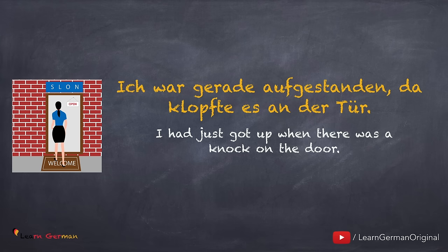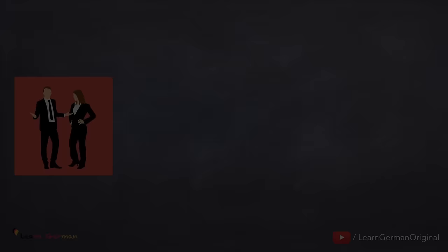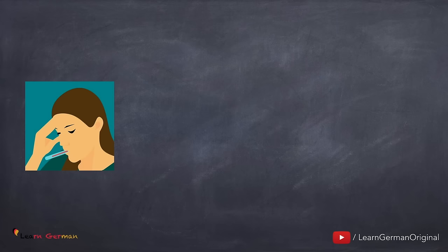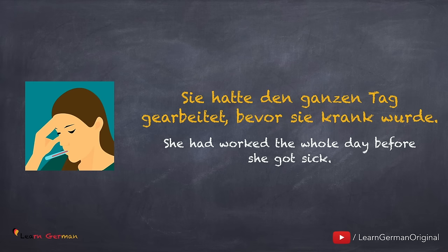Let's first look at a few examples. Ich war gerade aufgestanden, da klopfte es an der Tür. Er hat sie nicht erkannt, obwohl er sie vorher schon einmal gesehen hatte. And another example: Sie hatte den ganzen Tag gearbeitet, bevor sie krank wurde.